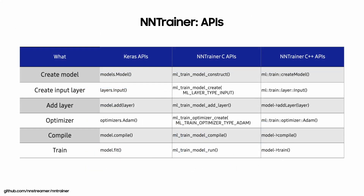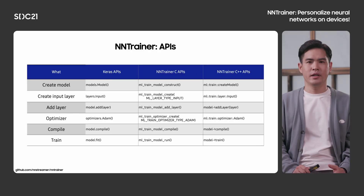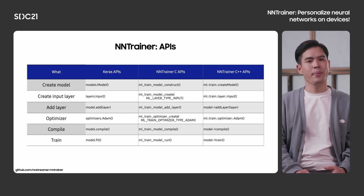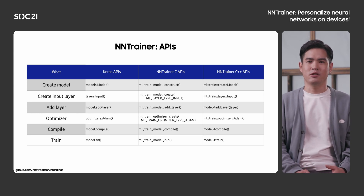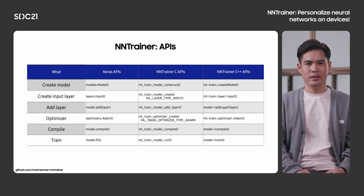If you have experience with other frameworks, it will be intuitive to use NN-Trainer. NN-Trainer has a coherent API set with Keras APIs, so you can create a model, create a layer, add it to the model, compile, and train with a single line of code. I'll show a demo with NN-Trainer running on a Samsung Galaxy Watch.